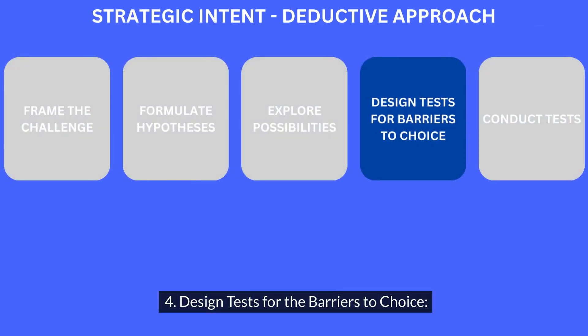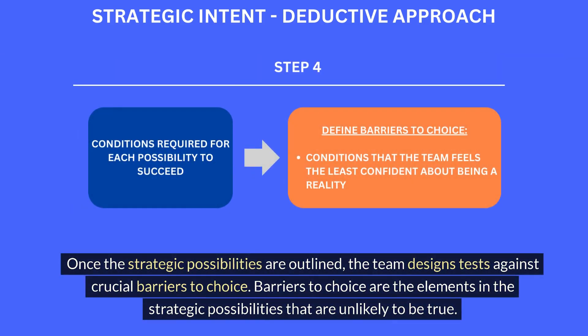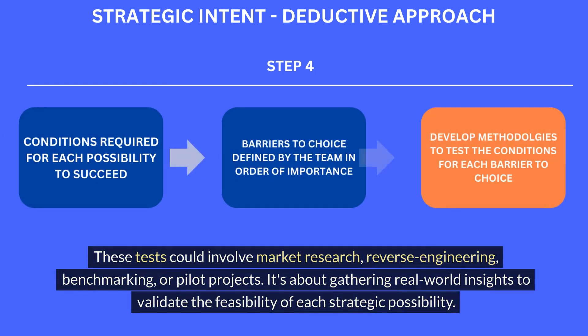Step 4: Design tests for the barriers to choice. Once the strategic possibilities are outlined, the team designs tests against crucial barriers to choice — elements in the strategic possibilities that are unlikely to be true. These tests could involve market research, reverse engineering, benchmarking, or pilot projects. It's about gathering real-world insights to validate the feasibility of each strategic possibility.